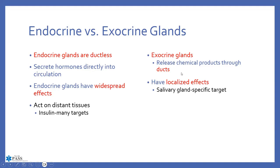Exocrine glands actually have ducts. I always explain this to students: think about it like HVAC ductwork in your house. The furnace or air conditioner kicks on and blows hot or cold air depending on the thermostat setting, and that air goes through ductwork and delivers it to your kitchen or bedroom. Same concept internally — exocrine glands have ducts and deliver whatever the message is directly to a specific target, like saliva from the salivary gland helping to break down food.